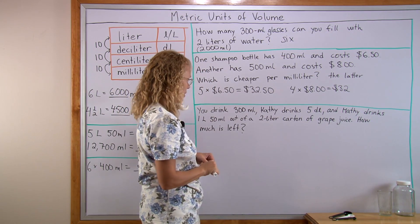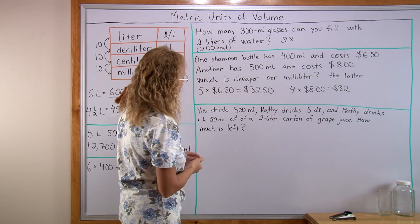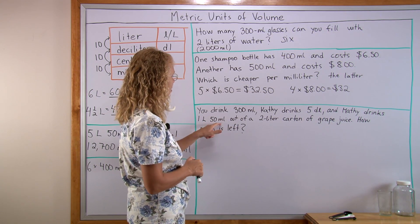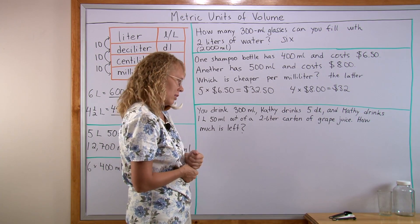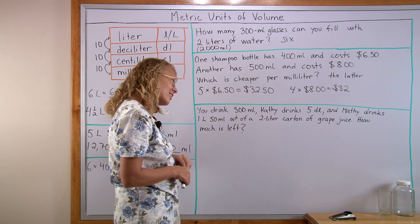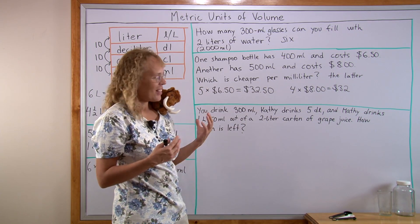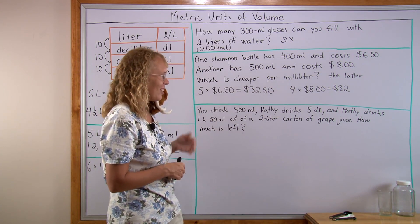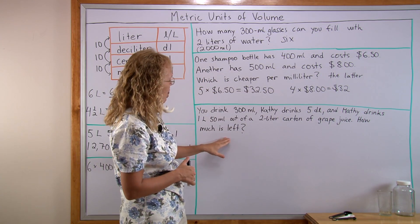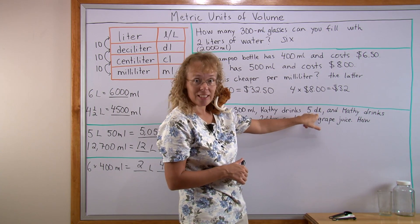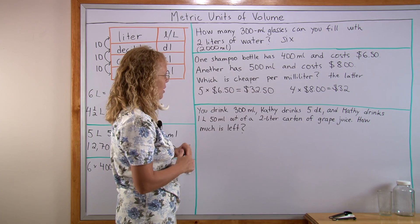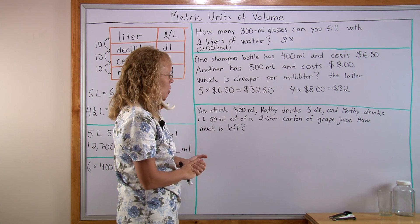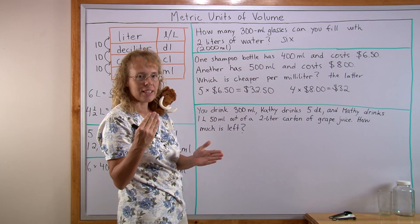And lastly — I think this is one that Matthew gave us, so thank you Matthew. You drink 300 milliliters, Kathy drinks 5 deciliters, and Matthew drinks 1 liter 50 milliliters out of a 2-liter carton of grape juice. Matthew wanted to change it to blueberry juice, but sorry, not this time. How much is left? We have milliliters, deciliters, and liters, and we need to add those amounts then subtract from 2 liters. But we cannot do that until they are all in the same unit.